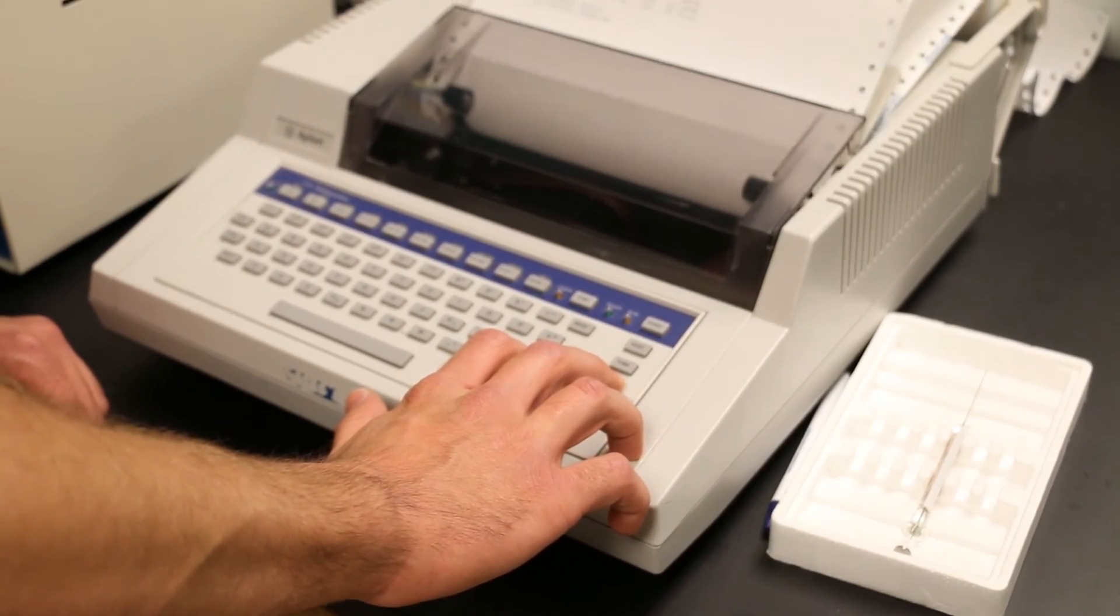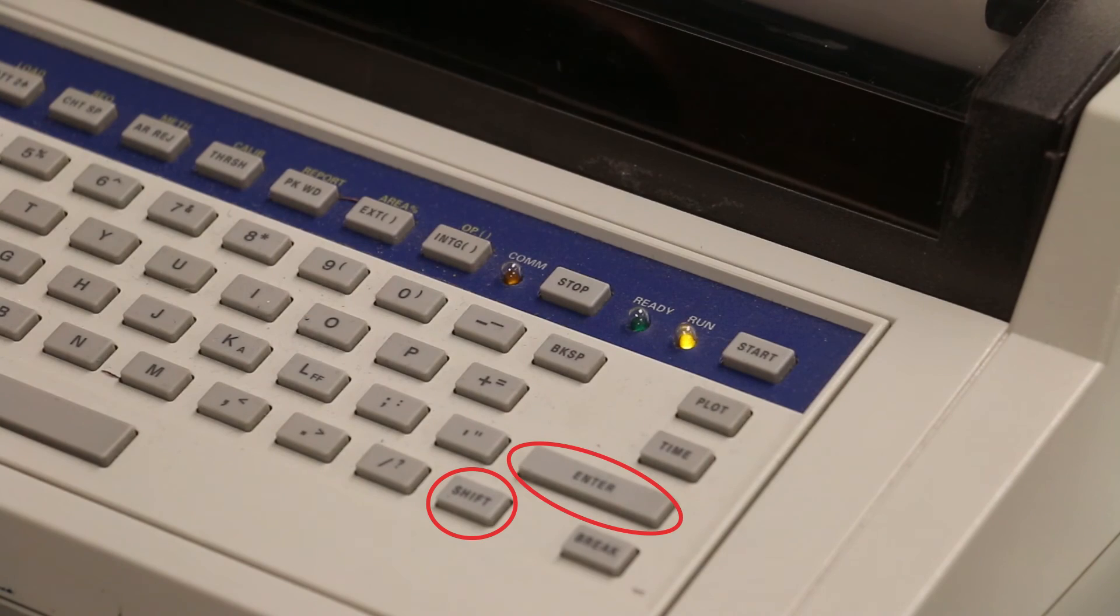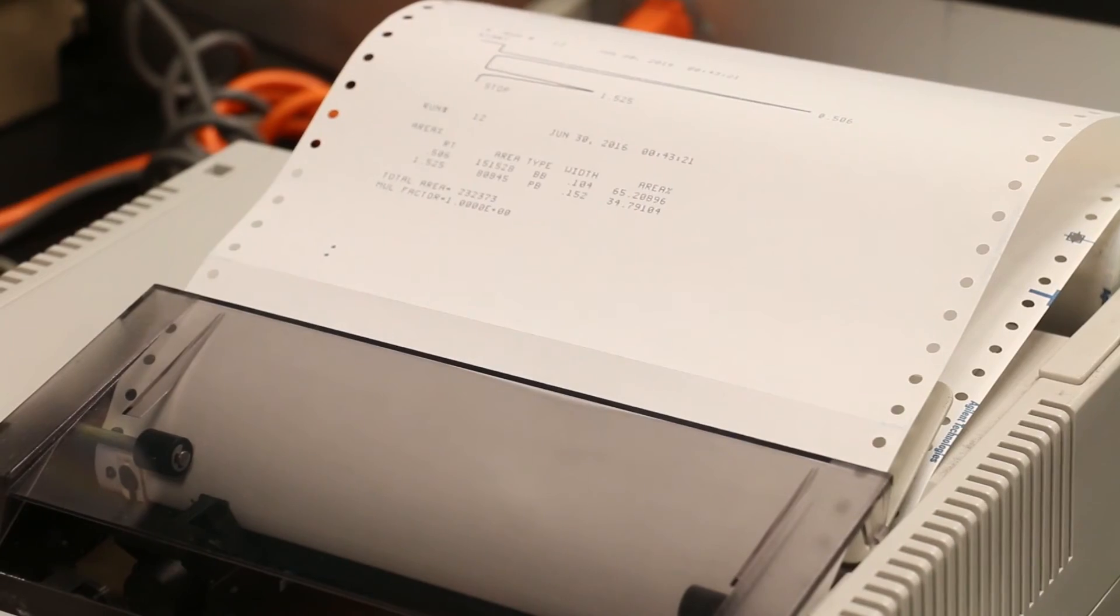You'll need to feed the paper up on the integrator by pressing shift and enter buttons simultaneously until your printout can be easily removed.